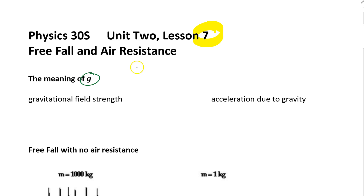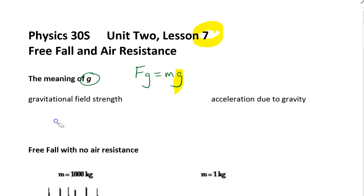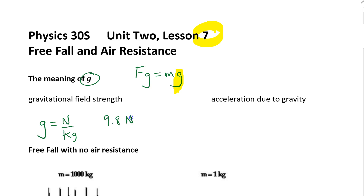We see it when we're talking about FG is equal to MG. I'm talking about this G right here — what does it mean? I have two ways of thinking about the same thing. One is as a gravitational field strength. When I think of it in terms of how strong a field is, then my units are newtons per kilogram. So, close to the surface of the Earth, we could have a field strength of 9.8 newtons per kilogram. For every kilogram of mass that you bring into this gravitational field, it will experience a force of 9.8 newtons.